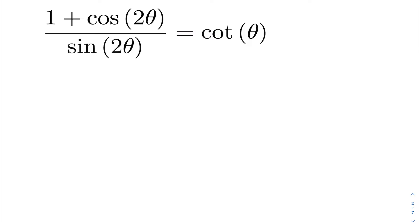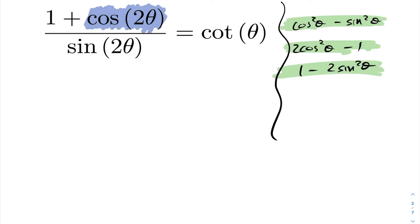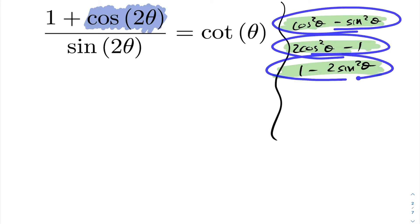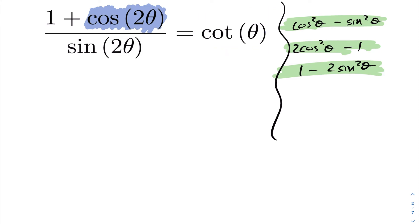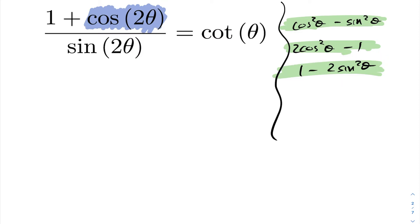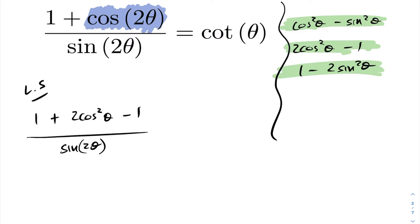For cos 2theta I have three different formulas to choose from. Since cotangent of theta is cos over sine, I'm not going to choose the formula that leaves me with a sine on top. Instead I'll choose the expression that causes the ones to cancel — that is, cos 2theta = 2cos²theta − 1, so 1 + cos 2theta = 2cos²theta.